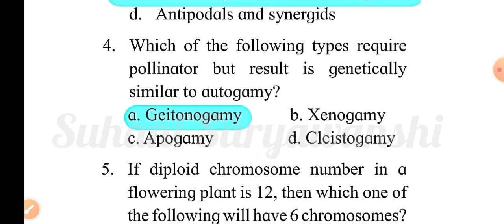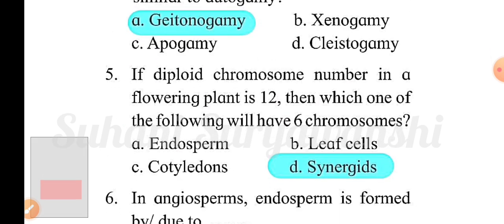Fourth question: which of the following types require a pollinator but result in offspring genetically similar to autogamy? Option A: geitonogamy; option B: xenogamy; option C: apogamy; option D: cleistogamy. The correct answer is option A, geitonogamy. Fifth question: if the diploid chromosome number in a flowering plant is 12, which of the following will have six chromosomes? Option A: endosperm; option B: leaf cells; option C: cotyledons; option D: synergids. The correct answer is option D, synergids.